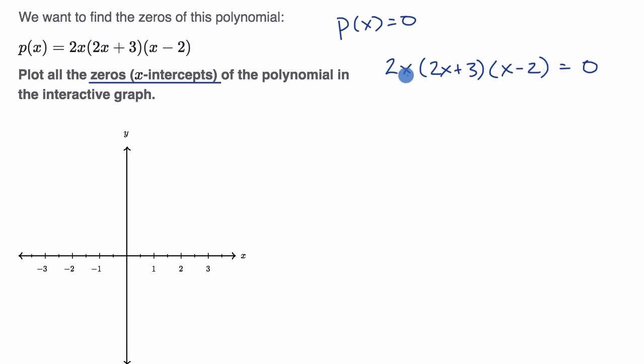So for example, if 2x is equal to zero, it would make the whole thing zero. So 2x could be equal to zero, and if 2x is equal to zero, that means x is equal to zero. And you could try that out. If x is equal to zero, this part right over here is going to be equal to zero. It doesn't matter what these other two things are. Zero times something times something is going to be equal to zero.